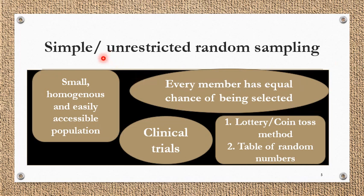Simple or unrestricted random sampling is very important because at one or another step of all other sampling techniques, we are doing random sampling. Random sampling means every member has an equal chance of being selected — there is no bias, no partiality, no favoritism. It is mostly done on small, homogeneous, and easily accessible populations where the whole population can be easily accessed.